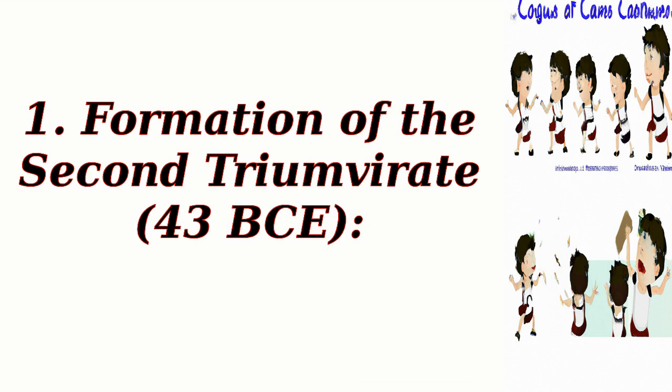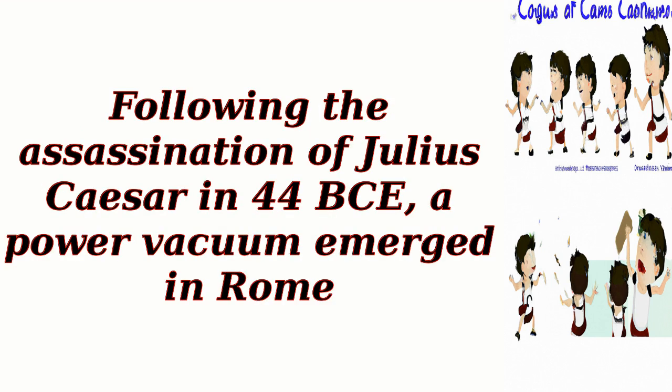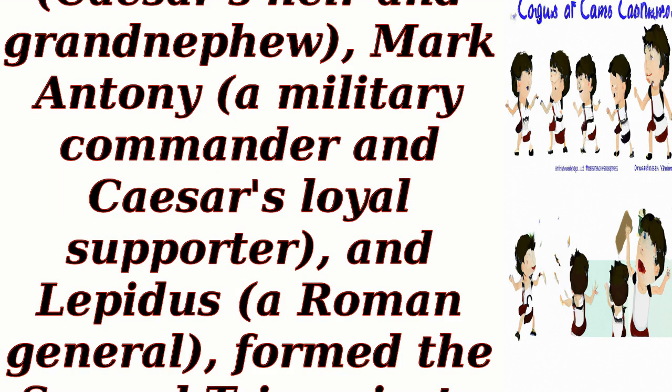1. Formation of the Second Triumvirate, 43 BCE. Following the assassination of Julius Caesar in 44 BCE, a power vacuum emerged in Rome. Three prominent figures — Octavian, Caesar's heir and grandnephew; Mark Antony, a military commander and Caesar's loyal supporter; and Lepidus, a Roman general — formed the Second Triumvirate to consolidate their power.